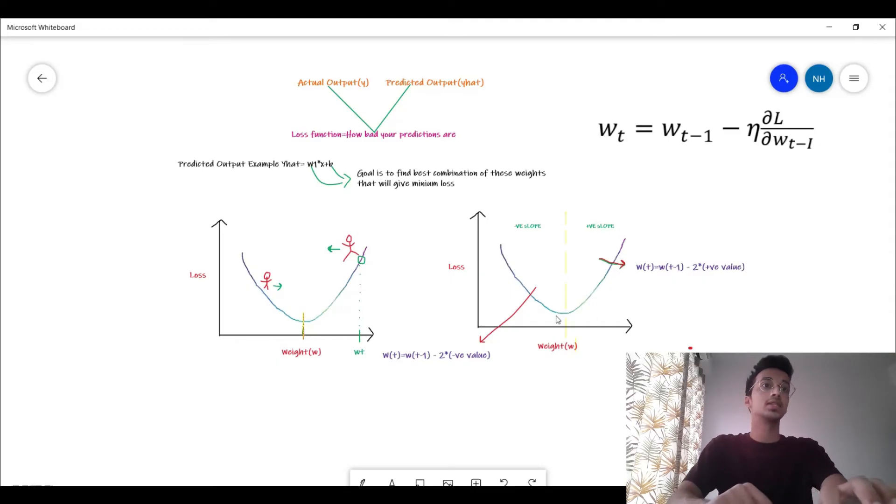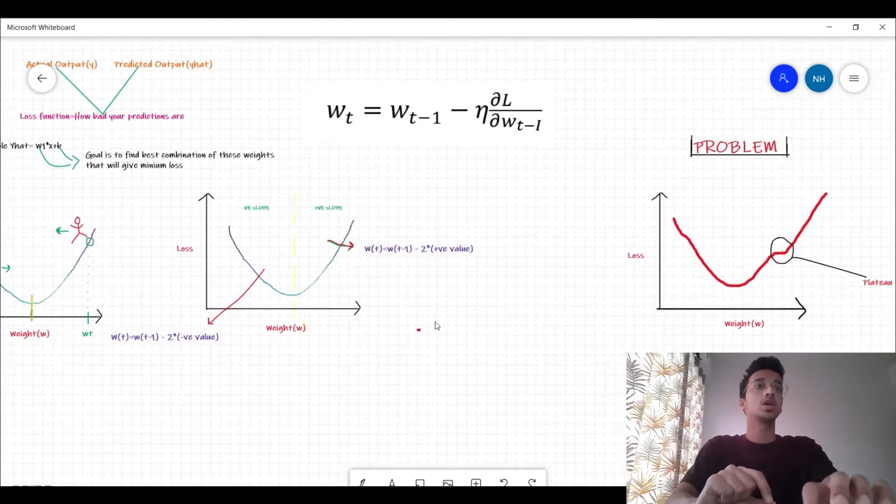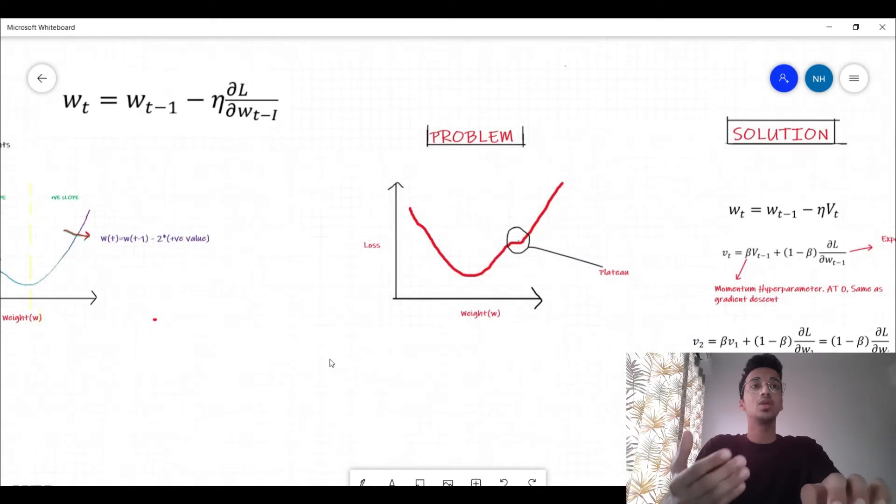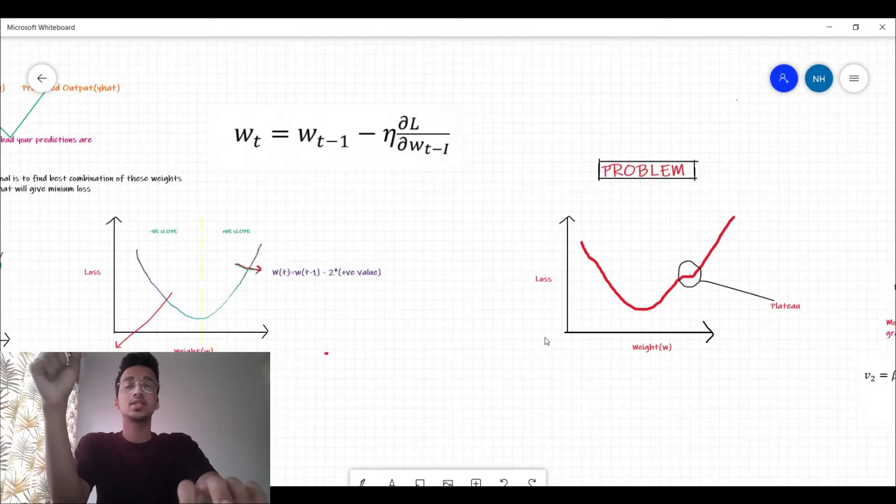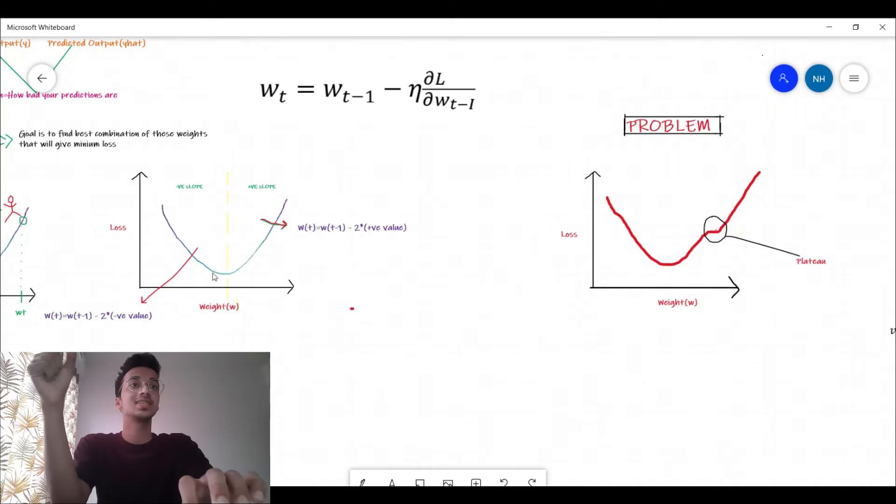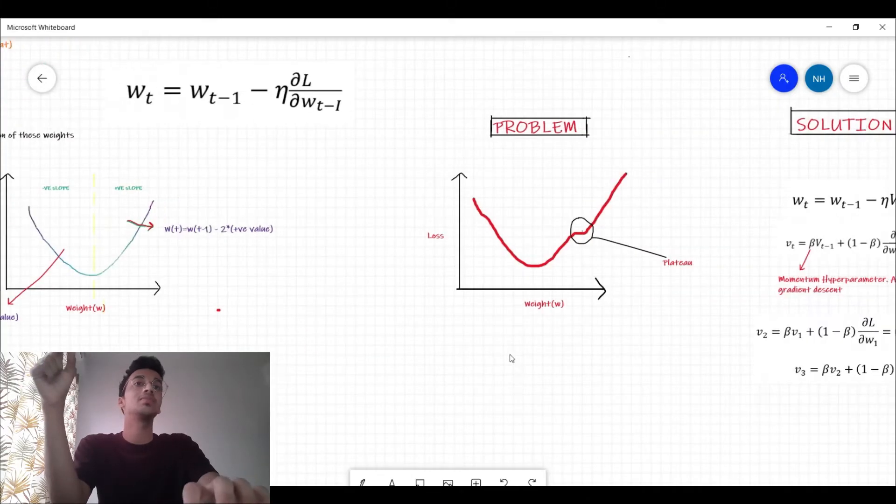So what is the problem with this? Let me show you what problems could come up and that is how we can get started with gradient descent with momentum. You saw a loss with respect to weight curve like this, let's imagine if the curve looks something like this.